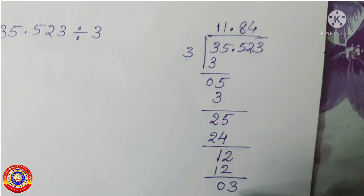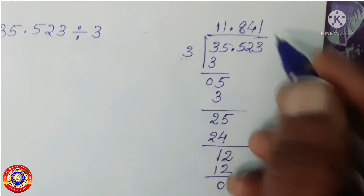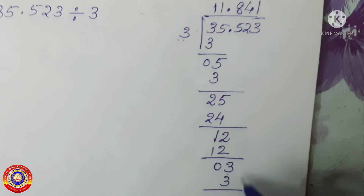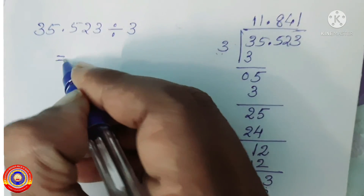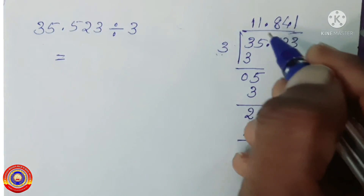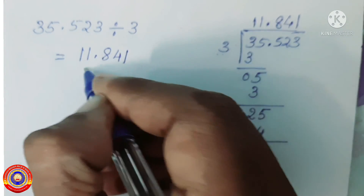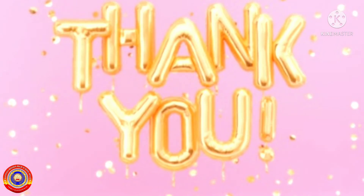Next, we have to bring down the number in the thousandth place. Then 3 divided by 3 is equal to 1. 3 into 1 is equal to 3, and 3 minus 3 is equal to 0. Therefore, 35.523 divided by 3 is equal to 11.841. Is it clear for you, children? Here are some homework activities for you — do it well. That's all for today, children. We shall continue our class on the next day. Thank you.